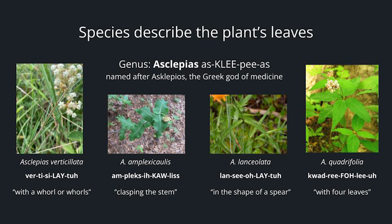Some species names describe the plant's leaves. The genus Asclepias — the milkweed — is named after Asclepius, the Greek god of medicine. If the leaves are whorled around the stem, that would be Asclepias verticillata. If the leaves are clasping the stem, that would be Asclepias amplexicaulis. If the leaf is in the shape of a spear, lanceolata. And an Asclepias with four leaves is Asclepias quadrifolia.